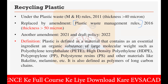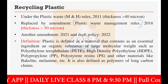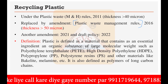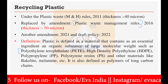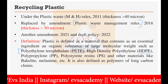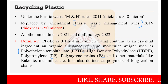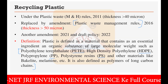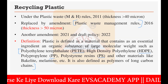According to the Plastic Waste Management Rules 2016, plastic is defined as a material that contains as an essential ingredient an organic substance of large molecular weight. This includes Polyethylene Terephthalate (PET), High Density Polyethylene (HDPE), Polypropylene (PP), Polystyrene resins (PS), and other materials like Bakelite and melamine. Plastic is also defined as polymers of long carbon chains. All these materials fall under the category of plastic as defined by these rules.